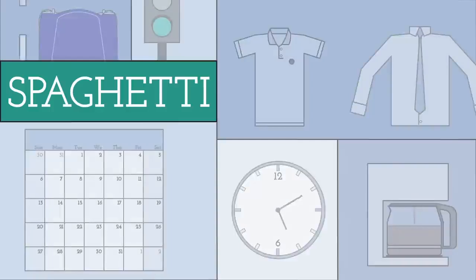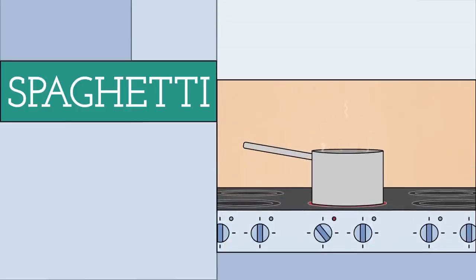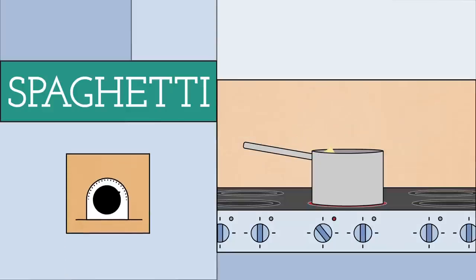Let's say you want to make some spaghetti. In order to do this successfully, there's a certain set of steps you need to follow in a particular order. First, you need to boil a pot of water. Once it's boiling, you then add the spaghetti and cook it for a set amount of time, stirring occasionally.